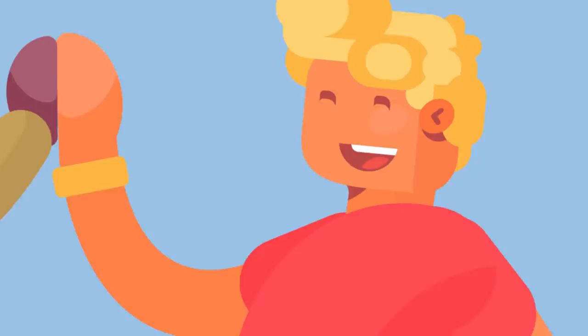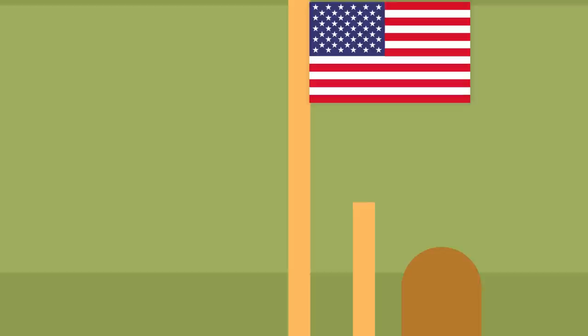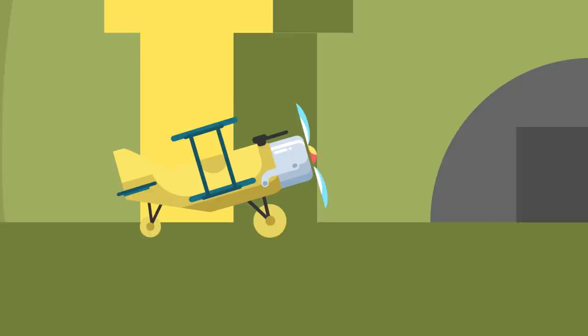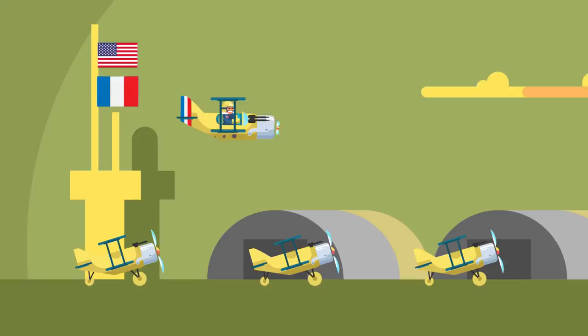Bullard initially attempted to join the Escadrille Americaine, a squadron of American pilots who had volunteered to serve with the allies while America remained neutral. Unfortunately, the squadron had recently stopped accepting applicants, and Bullard would serve with another squadron alongside French and American pilots. He would go on to fly twenty combat missions with the French, shooting down two enemy aircraft, although officially his kills could not be confirmed.